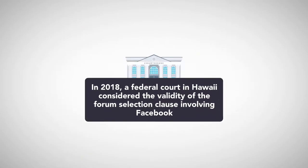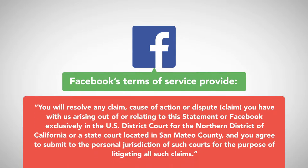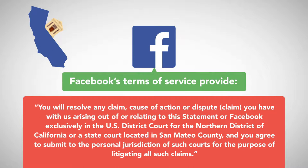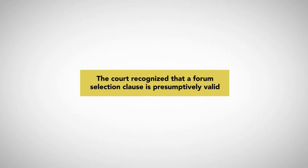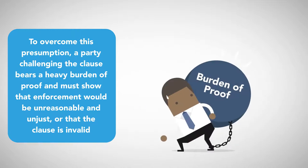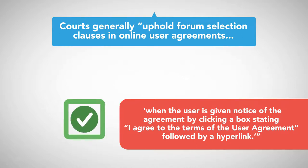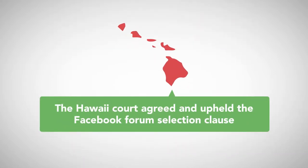In 2018, a federal court in Hawaii considered the validity of the forum selection clause involving Facebook. Facebook's terms of service provide that you will resolve any claim, cause of action, or dispute you have with us arising out of or relating to this statement or Facebook exclusively in the U.S. District Court for the Northern District of California or a state court located in San Mateo County, and you agree to submit to the personal jurisdiction of such courts for the purpose of litigating all such claims. The court recognized that a forum selection clause is presumptively valid, and to overcome this presumption a party bears a heavy burden showing enforcement would be unreasonable and unjust or that the clause is invalid due to fraud or overreaching. Courts generally uphold forum selection clauses in online user agreements when the user is given notice by clicking a box stating 'I agree to the terms of the user agreement,' followed by a hyperlink. The Hawaii court agreed and upheld the Facebook forum selection clause.